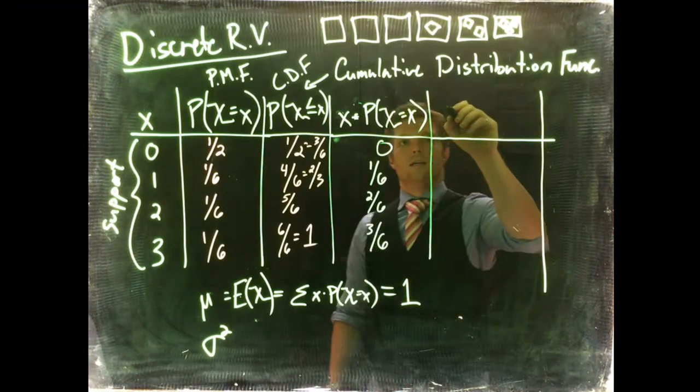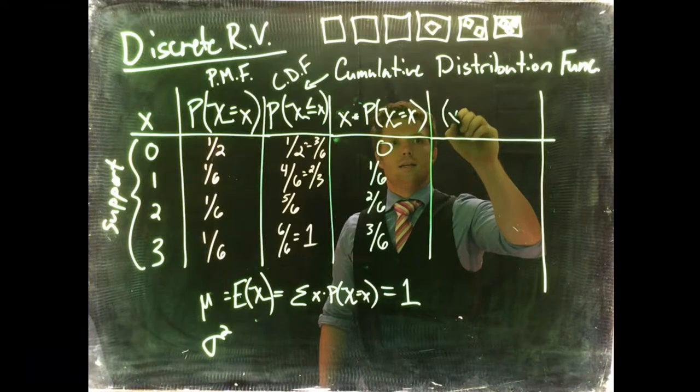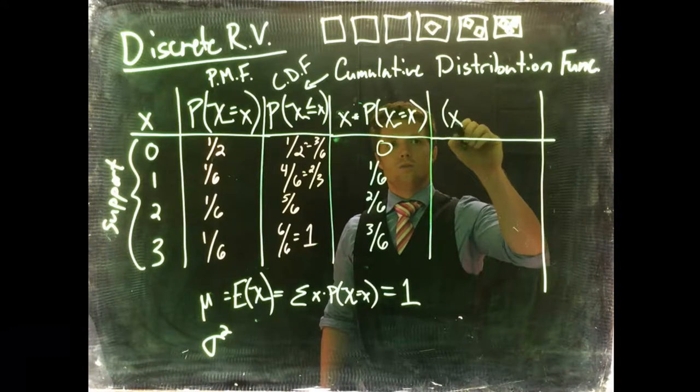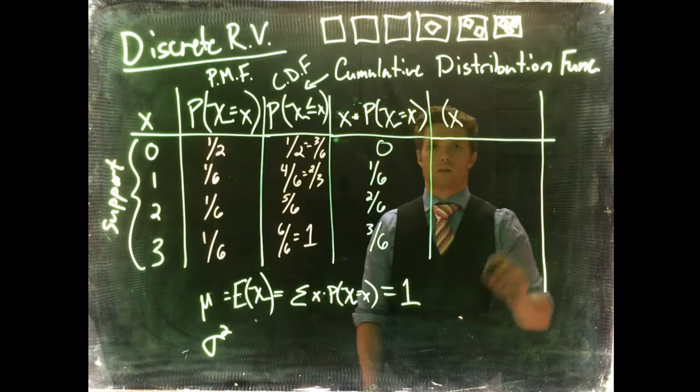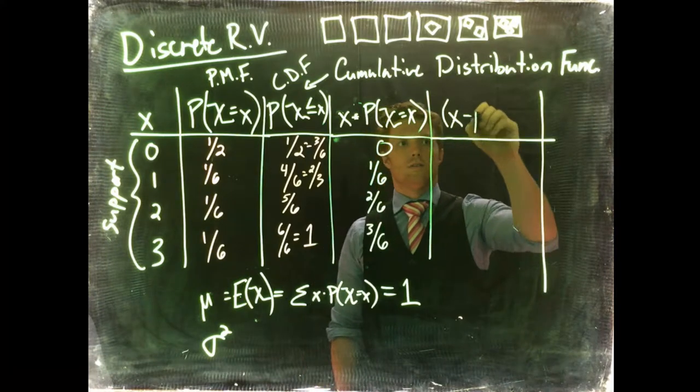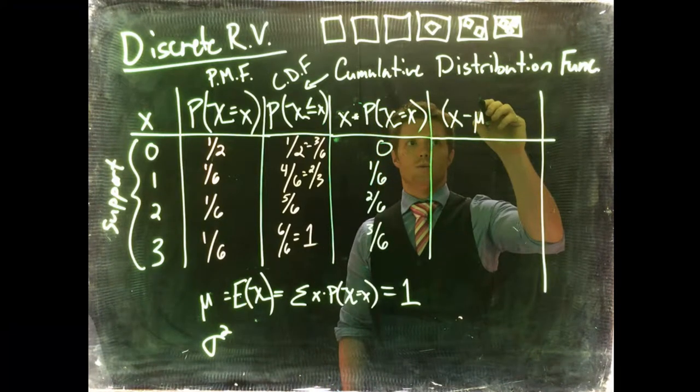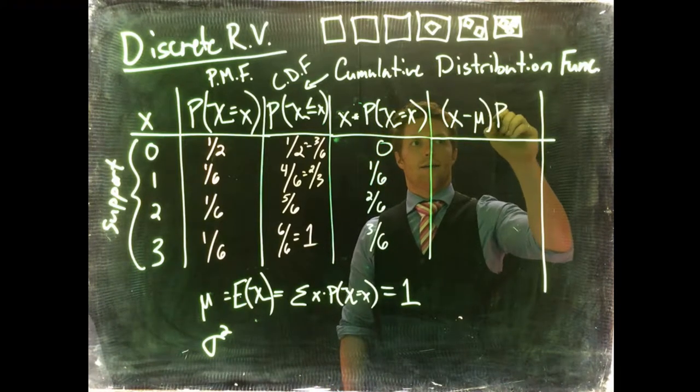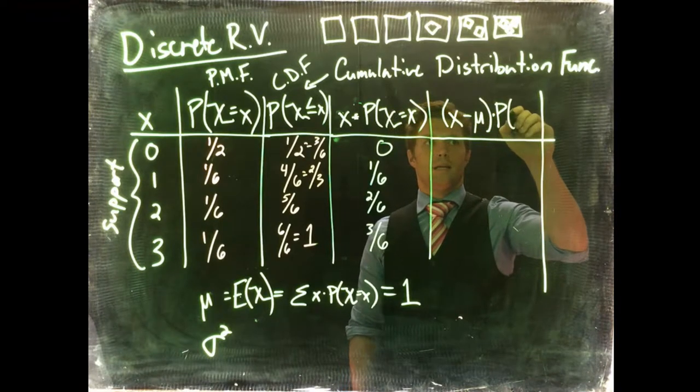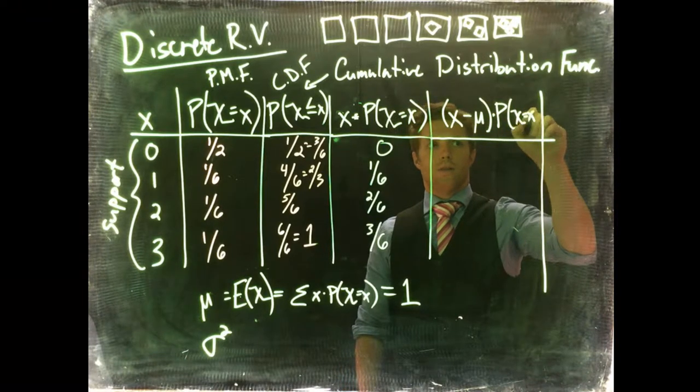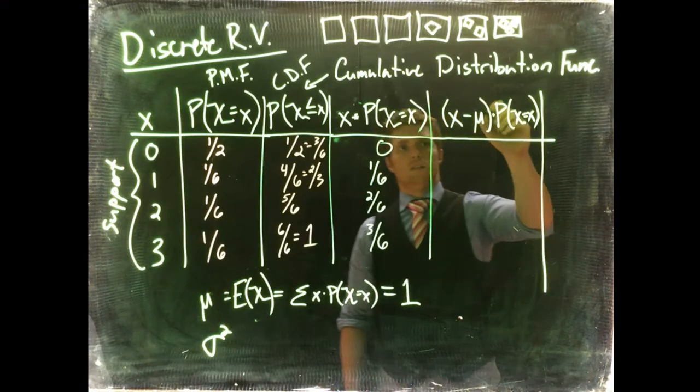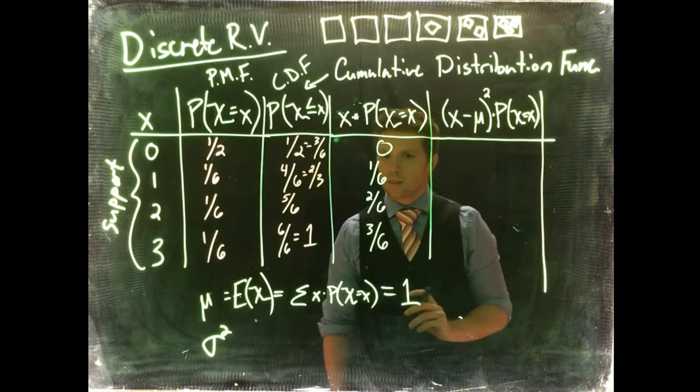Okay, so what we need here now is we need the individual member of our support minus our expected value, mu, multiplied by our probability of the discrete random variable equaling a member of the support. Oh, and this needs to be squared. We need to square that.